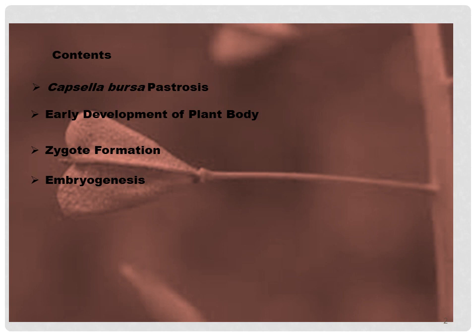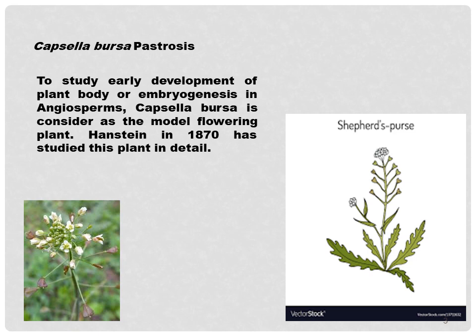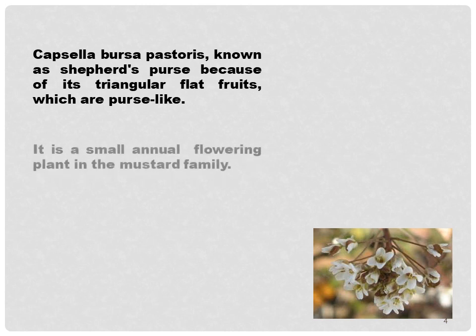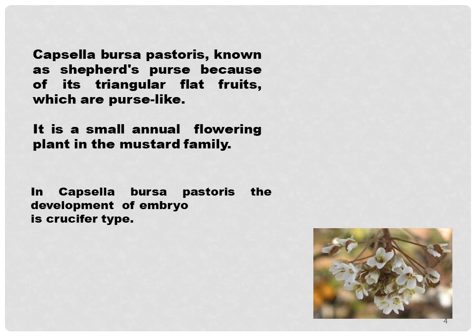Let's start with the brief introduction of Capsella bursa-pastoris. To study early development of plant body or embryogenesis in angiosperms, this plant is considered as the model flowering plant. Henstein in 1870 studied this plant in detail. This plant is also known as the shepherd's purse because of its triangular flat fruits which are purse-like. It is a small annual flowering plant in the mustard family, and the development of the embryo is crucifer type.